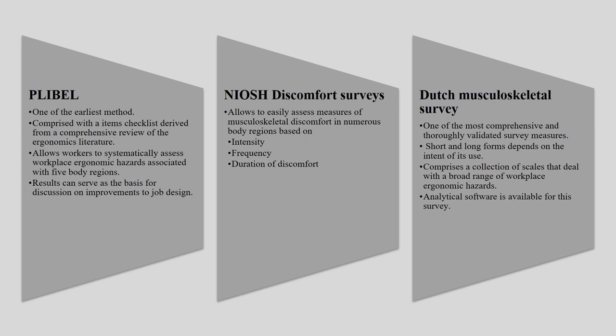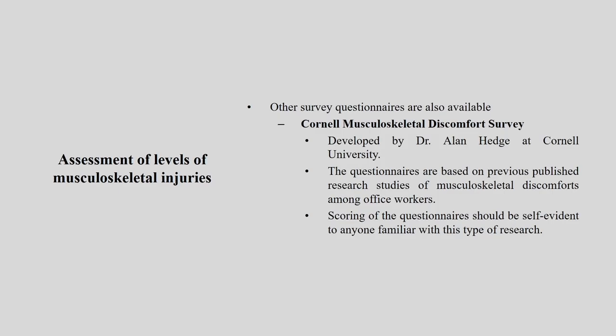The third important tool is the Dutch Musculoskeletal Survey — one of the most comprehensive, compact, and thoroughly validated survey measures. It has both short and long forms depending on the intent of use. The long version is almost 16 pages whereas the short version has less content. Depending on how rigorously you want to conduct the survey, you can choose either form.